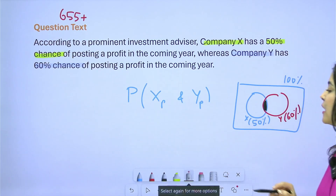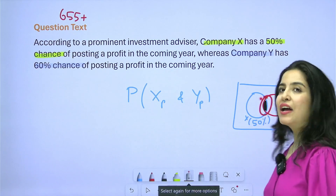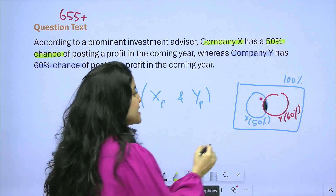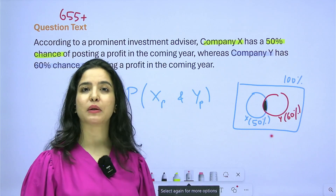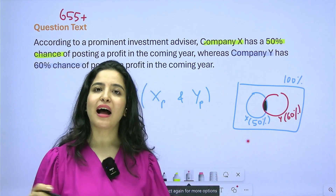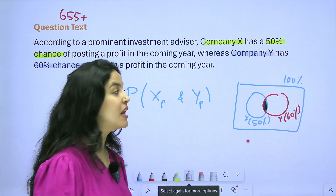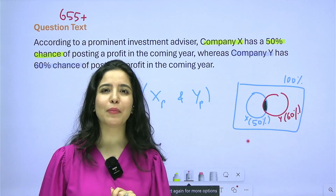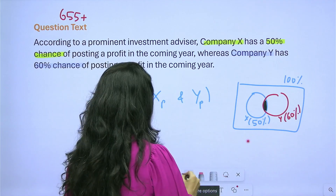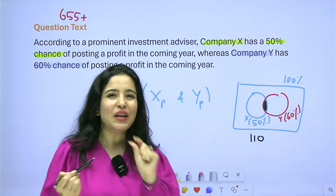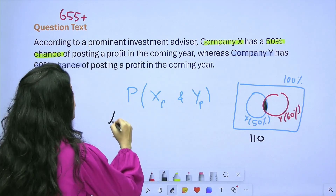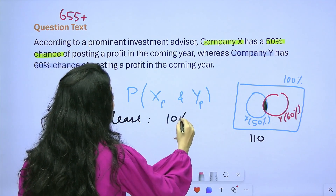For the least overlap, I want the circles as far apart as possible. Can they be completely disjoint? No — because 50% plus 60% equals 110%, which can't fit within 100%. So some overlap is required. The minimum overlap is exactly the amount by which they exceed 100%, which is 10%. Therefore, the least probability that both post a profit is 10%.